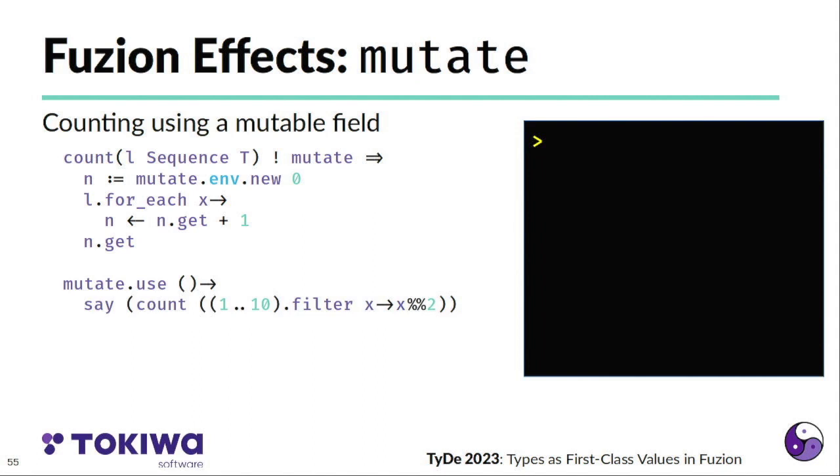Now to run this, we need to use the mutate effect. And in there, we can now use our count, for example, to count the number of even values in between 1 and 10. And it prints 5.